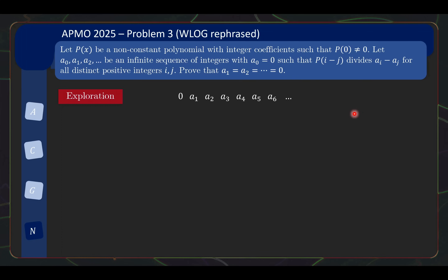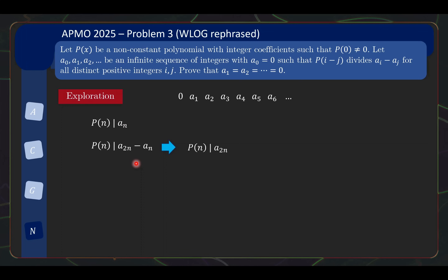Now let's do some actual exploration. With this notation, one advantage is that for any integer n, by definition of the property, P(n) must divide A_n minus A0. But since A0 = 0, we get the very clean statement: P(n) divides A_n for every n. We can roll this further: looking at 2n versus n, the gap in index is n, so P(n) also divides A_{2n} - A_n, and since P(n) divides A_n, it divides A_{2n}. Continuing, P(n) divides A_{kn} for all integers k.